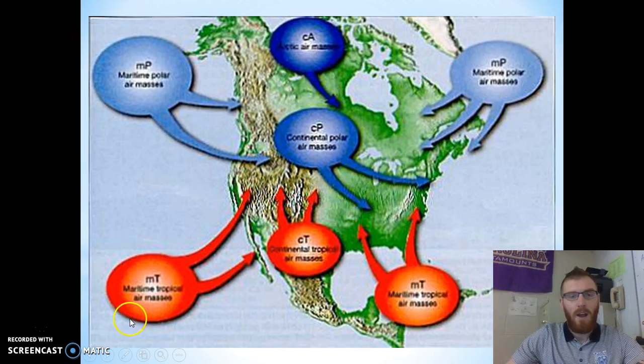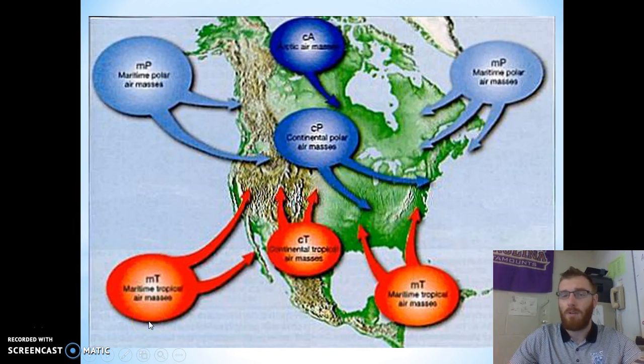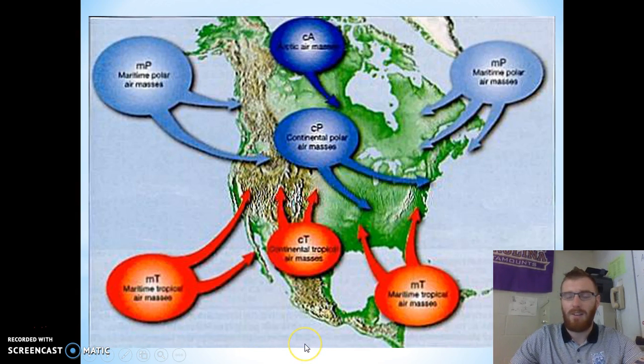Seeing this one here, I know that it's over water. It looks like it's coming from the equator because the equator is down in this direction. I can tell that it's maritime because it's over the ocean. It's tropical because it's coming from the equator. And if it comes from the equator, it's going to be generally warm.